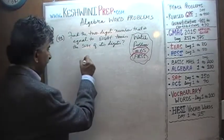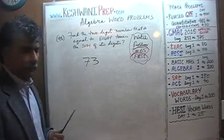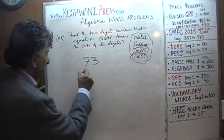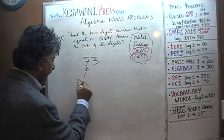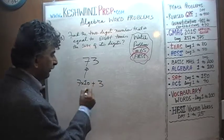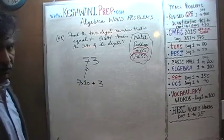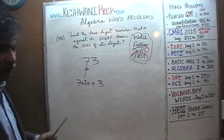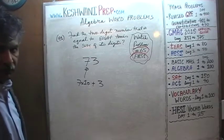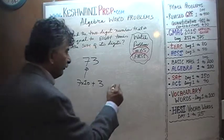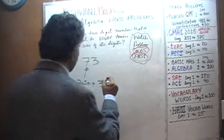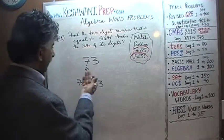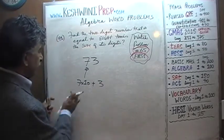For example, if we have the number 73, it is called that because 73 is made up of 7 tens and a 3. The tens digit here is 7 because it tells us how many tens we have — we have 7 tens. Let me start from the top here.